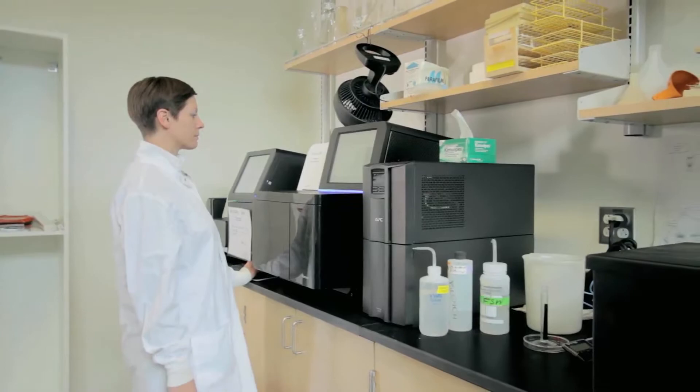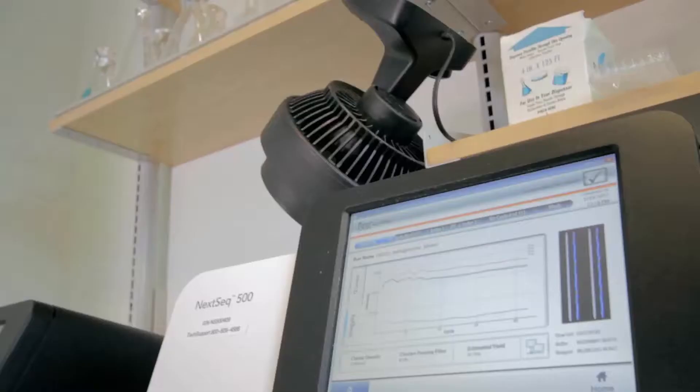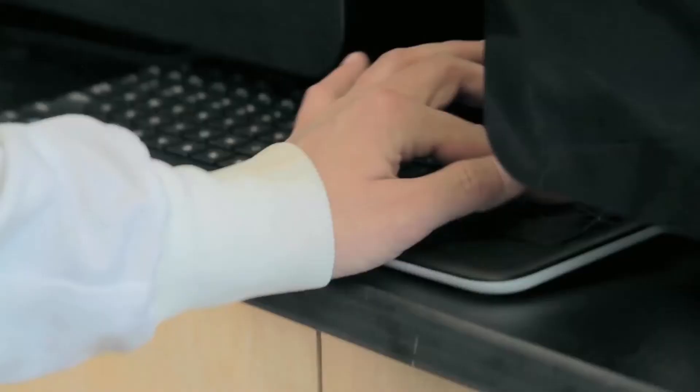When genomic libraries are ready, they are analyzed by one of SCGC's genomic sequencers. Currently, we utilize Illumina NextSeq 500 and MiSeq instruments. Illumina genomic sequencers read the four genetic letters of millions of short DNA fragments. Each fragment is a few hundreds of nucleotides long.